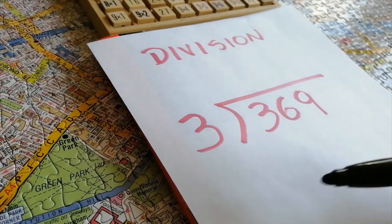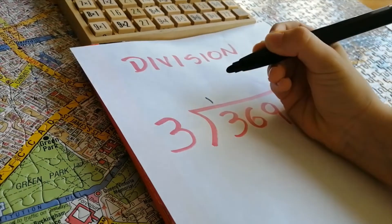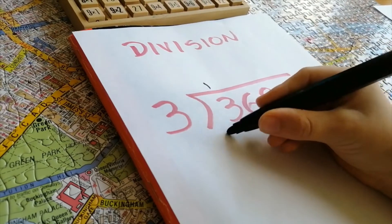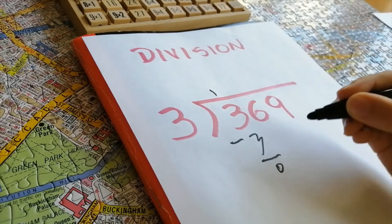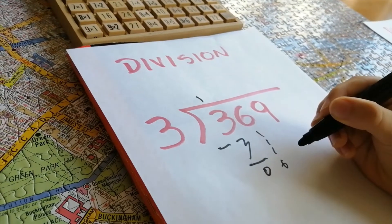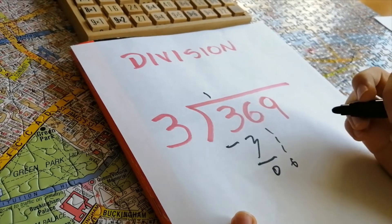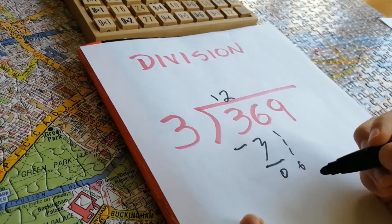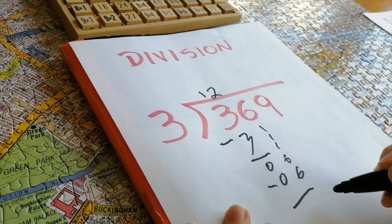¿Cuántas veces está el tres en el tres? Uno. Tres por uno, tres, menos tres, cero. Baja la cifra siguiente que es el seis. ¿Cuántas veces está el tres en el seis? Dos. Tres por dos, seis, menos seis, cero.